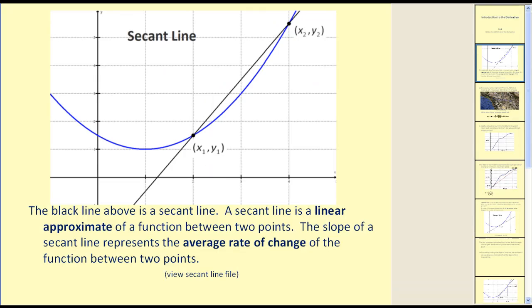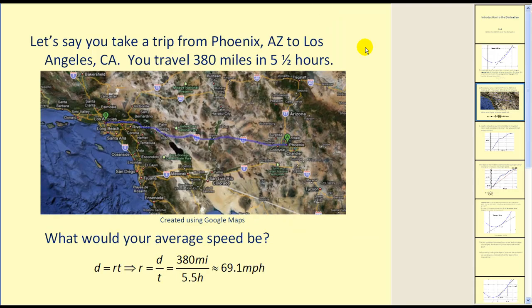Let's take a look at a real life example involving a secant line and its applications. Let's say you take a trip from Phoenix, Arizona to Los Angeles, California. You travel 380 miles in five and a half hours. What would your average speed be?